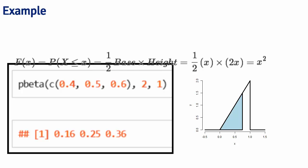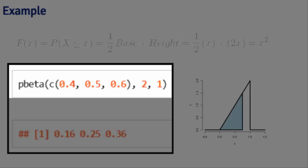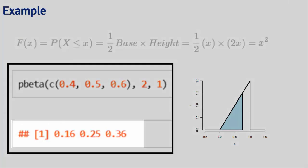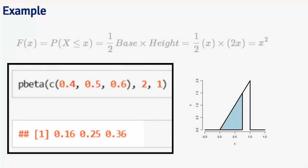Using pbeta with parameters 2 and 1 in R for the values 0.4, 0.5, and 0.6 gives 16%, 25%, and 36%. So the probability that 40% or fewer calls get answered is 16%, 50% or fewer is 25%, and 60% or fewer is 36%. The survival function is 1 minus x squared.